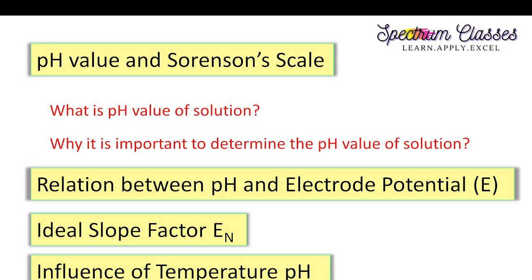Hello everyone, welcome back to Spectrum Classes. Today in this video I am going to derive the relationship between pH and electrode potential. The next topic is what is called the ideal slope factor and how temperature influences the pH value. These are a few important questions which are very essential to know.